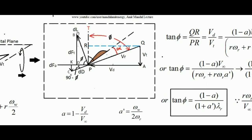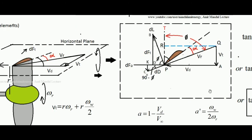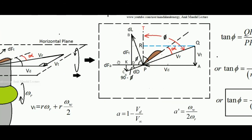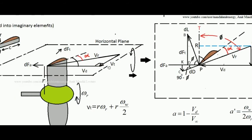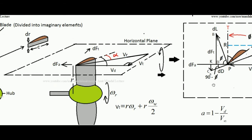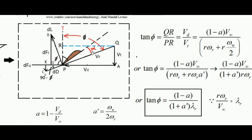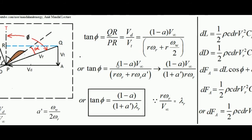Now we will talk about the lift force. Lift force DL is given by ½·ρ·A·Vr²·CL, where ρ is the air density and A is the chord length C times the span DR. So DL = ½·ρ·C·DR·Vr²·CL. Vr is the relative velocity vector striking this aerofoil. Similarly, the drag force DD = ½·ρ·C·DR·Vr²·CD — the infinitesimal drag force developed on that segment.